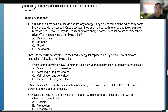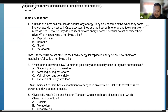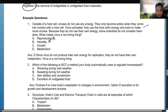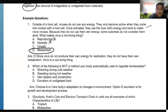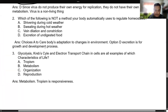Example question: Outside of a host cell, viruses do not use energy. They only become active when they come into contact with a host cell, using the host cell's energy to make more viruses. Because they do not use their own energy, some scientists do not consider them alive. What makes a virus a non-living thing? The answer is metabolism, since viruses do not produce their own energy for replication — they have no metabolism.